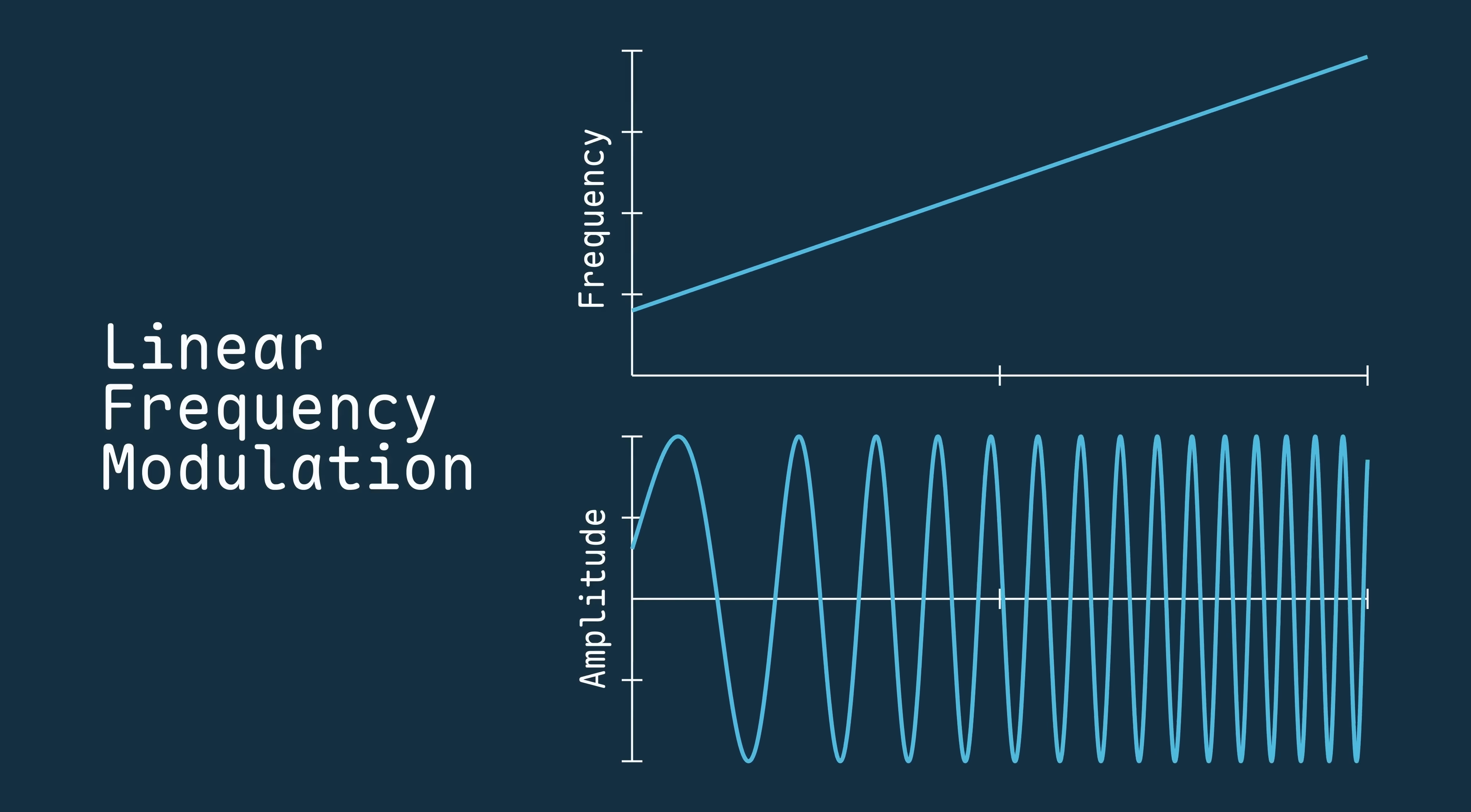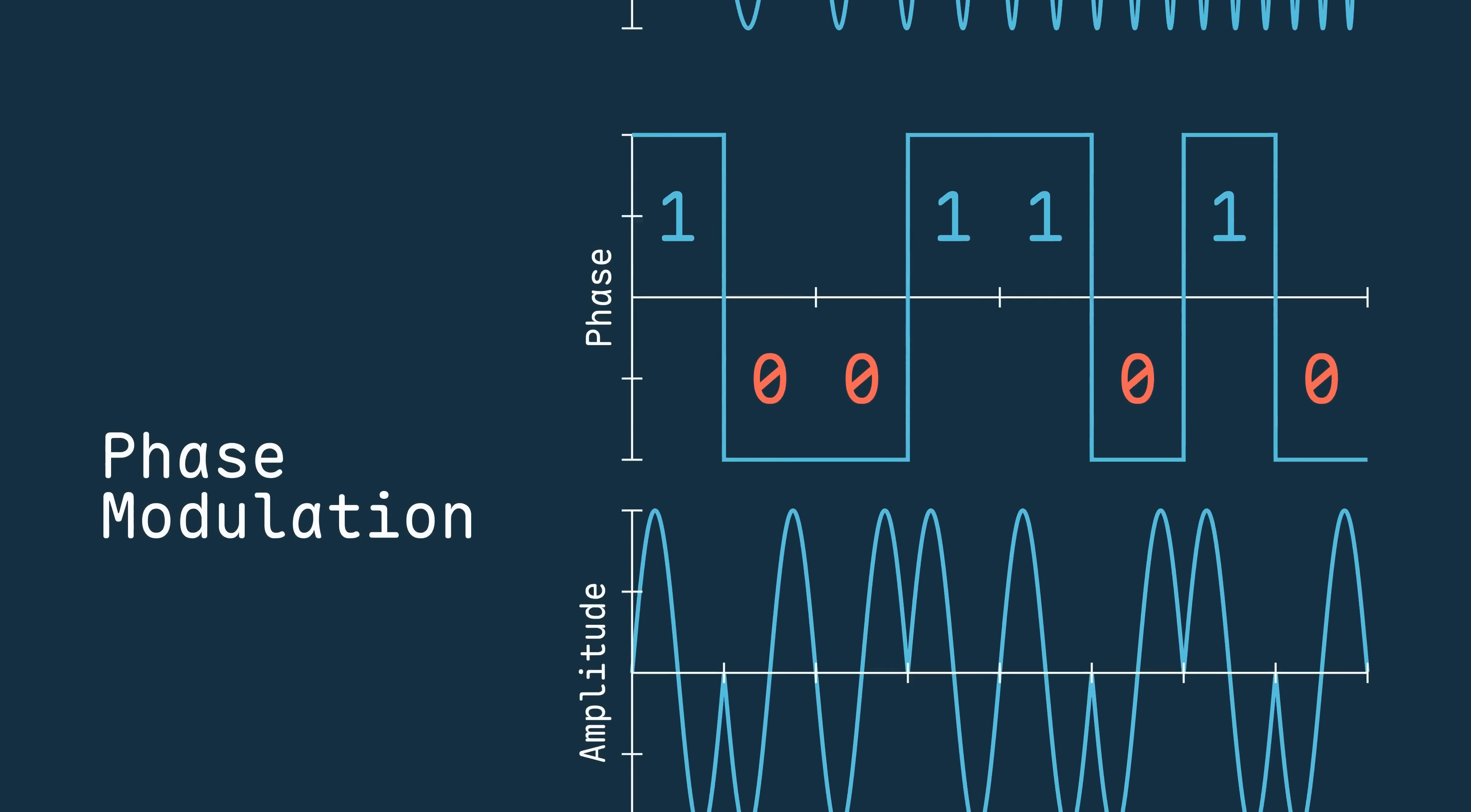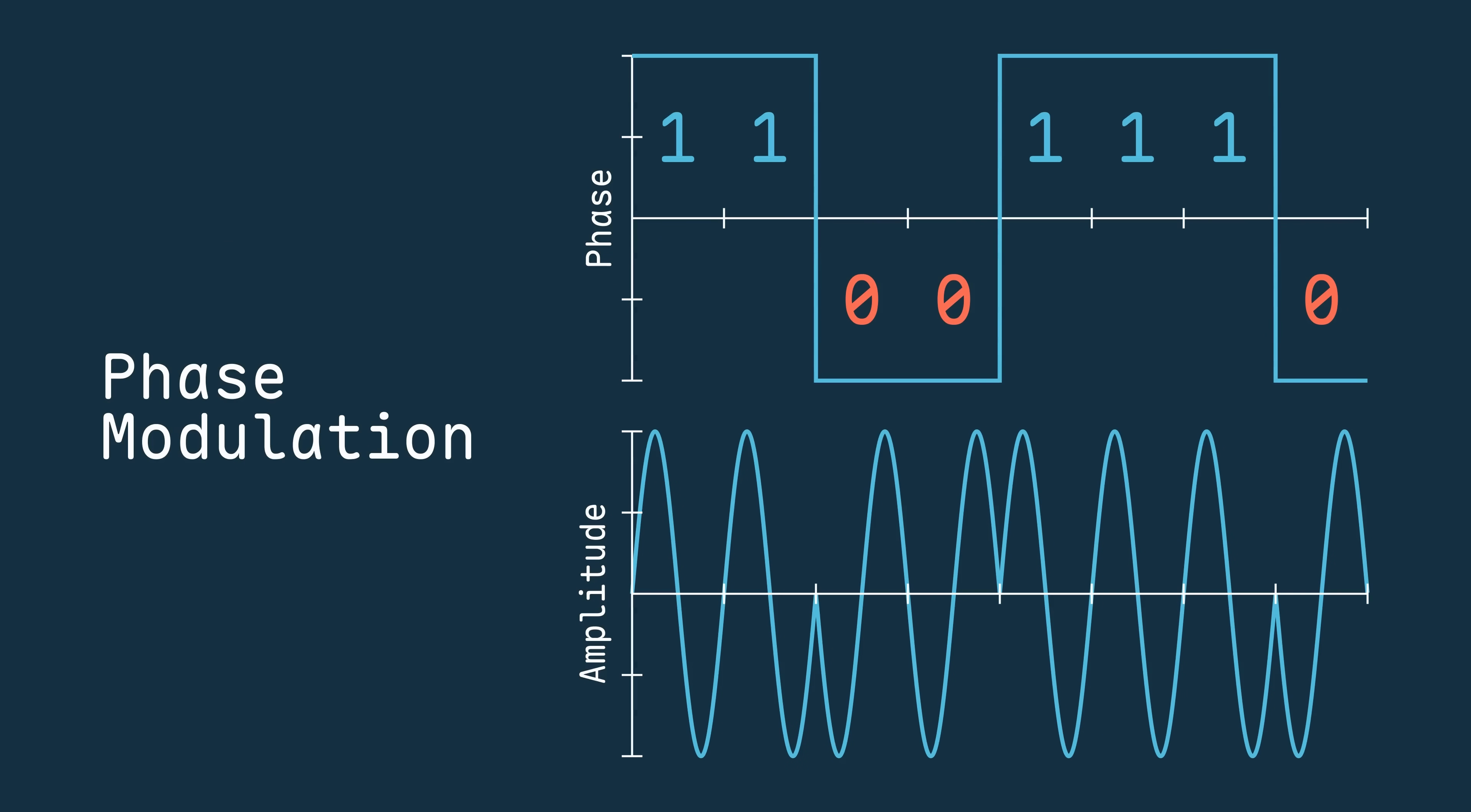common modulation schemes include linear frequency modulation, where you ramp frequency over time, and I actually covered this in another video on FMCW radar, and phase coding, where you shift the signal's phase in increments of 180 degrees or 90 degrees normally.